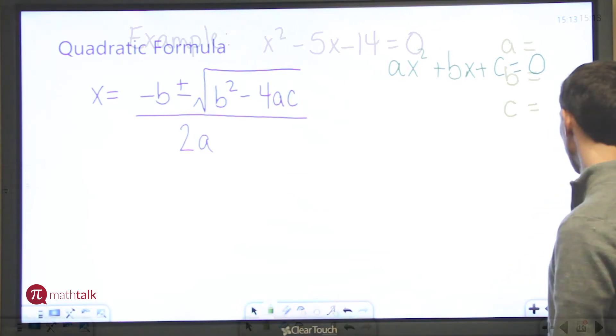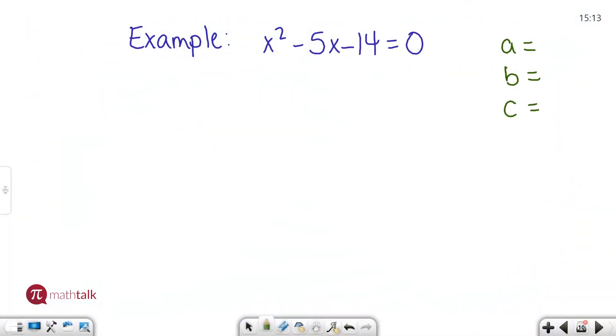So let's get started. I have an example here that says x squared minus 5x minus 14 equals 0 and I need to figure out what is a, what is b, and what is c. A is always the number in front of your x squared term whenever there's not a number there like in this case it's always going to be 1. B is the number in front of your plain x term which in this case is negative 5 and then c is always the number that's by itself with no x's after it. In this case negative 14.